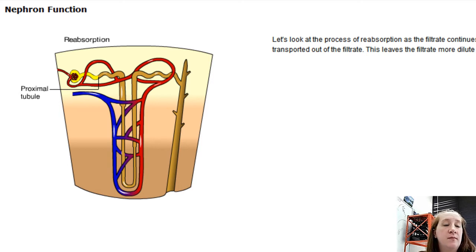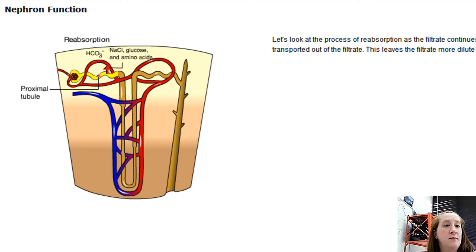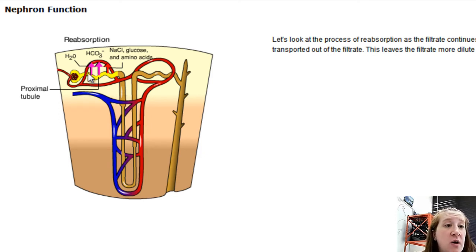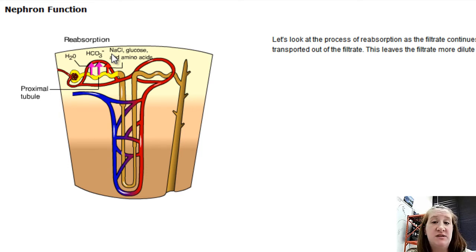In the proximal tubule, reabsorption of bicarbonate ions helps regulate blood pH. Sodium chloride, glucose, and amino acids are actively transported out of the filtrate. This leaves the filtrate more dilute than the surrounding interstitial fluid, so water follows by osmosis — no energy required. Those solutes and water re-enter the blood. The body uses basic osmosis to maximize efficiency, reabsorbing salts and other solutes so water moves back into the blood by osmosis.